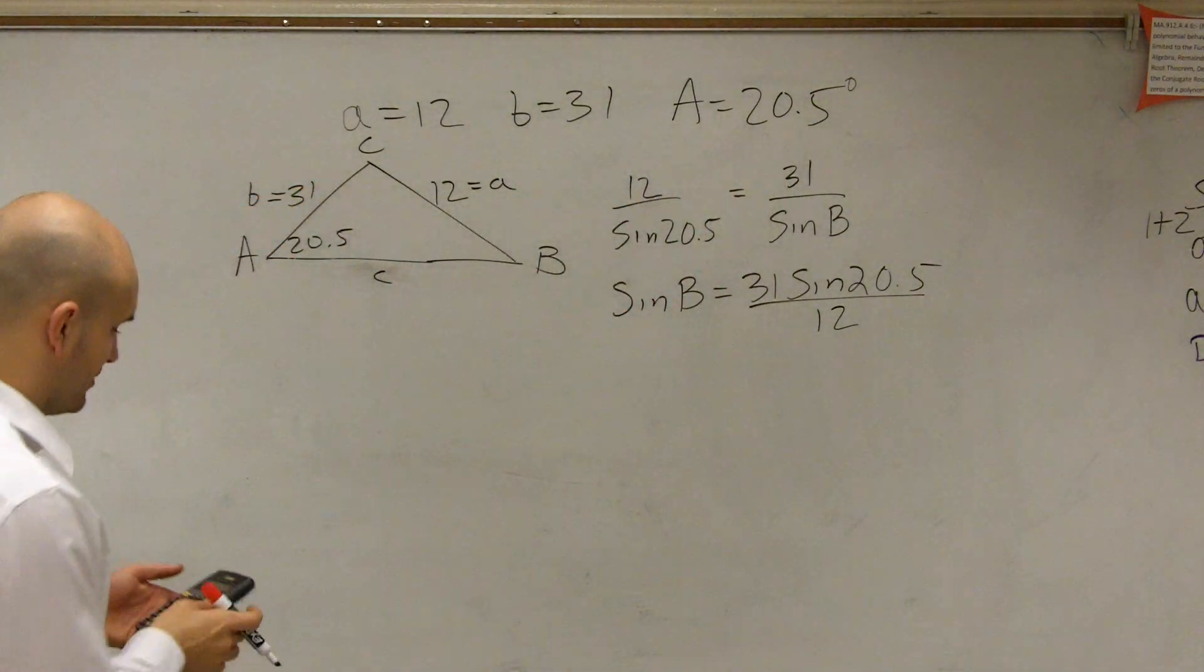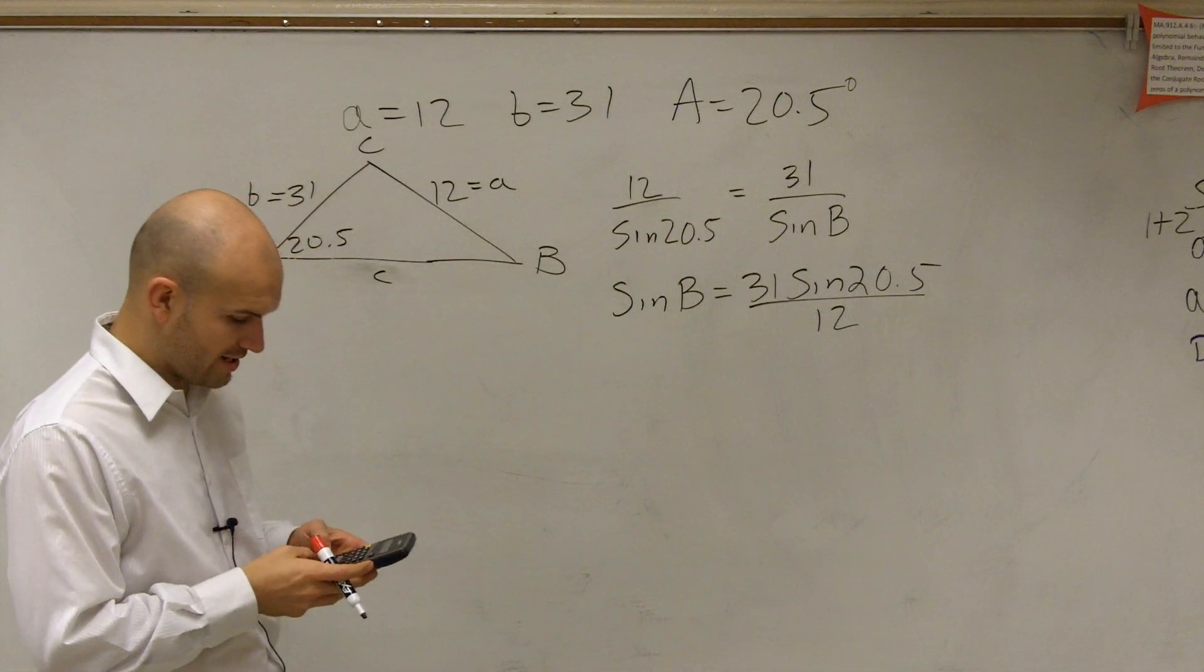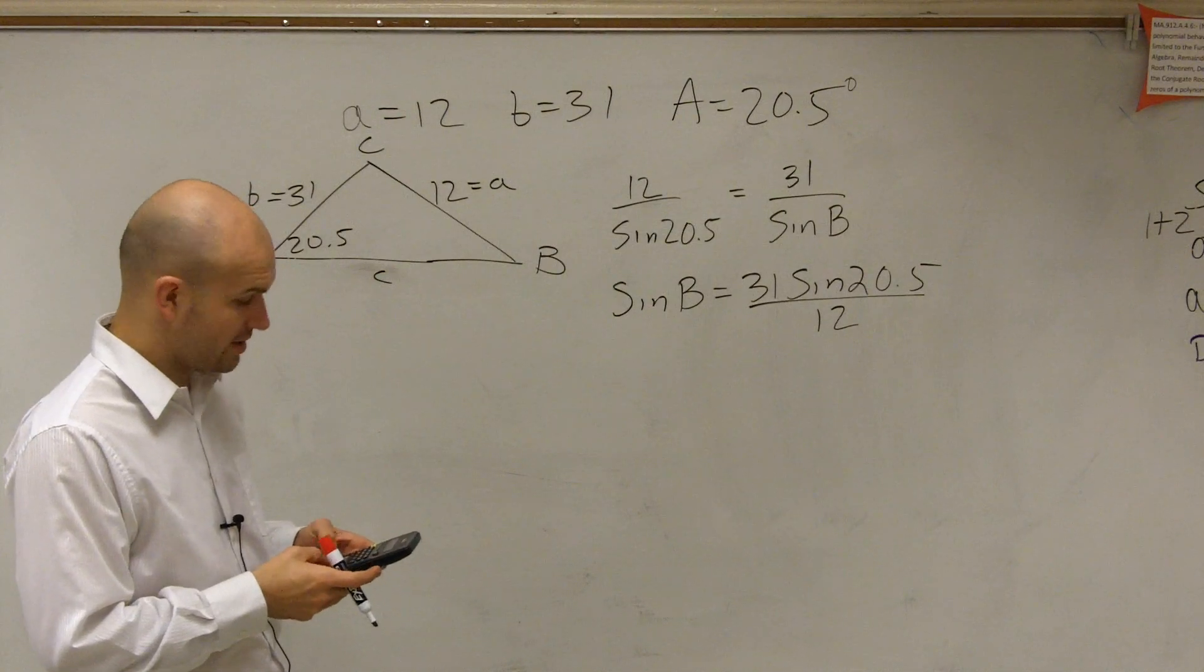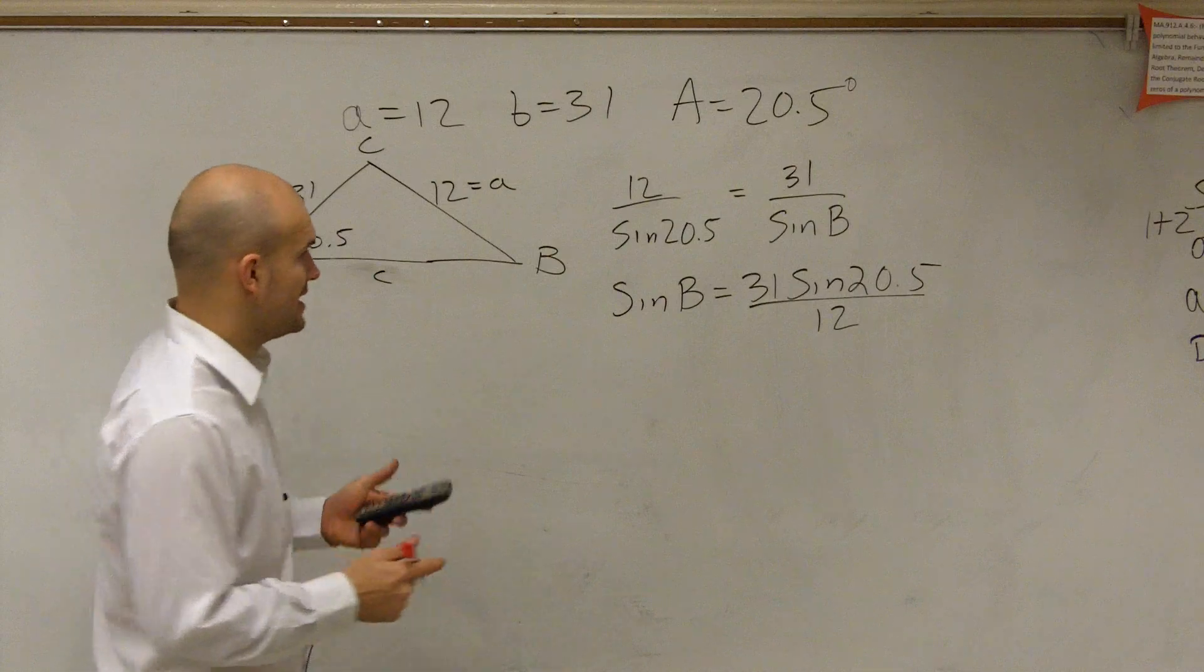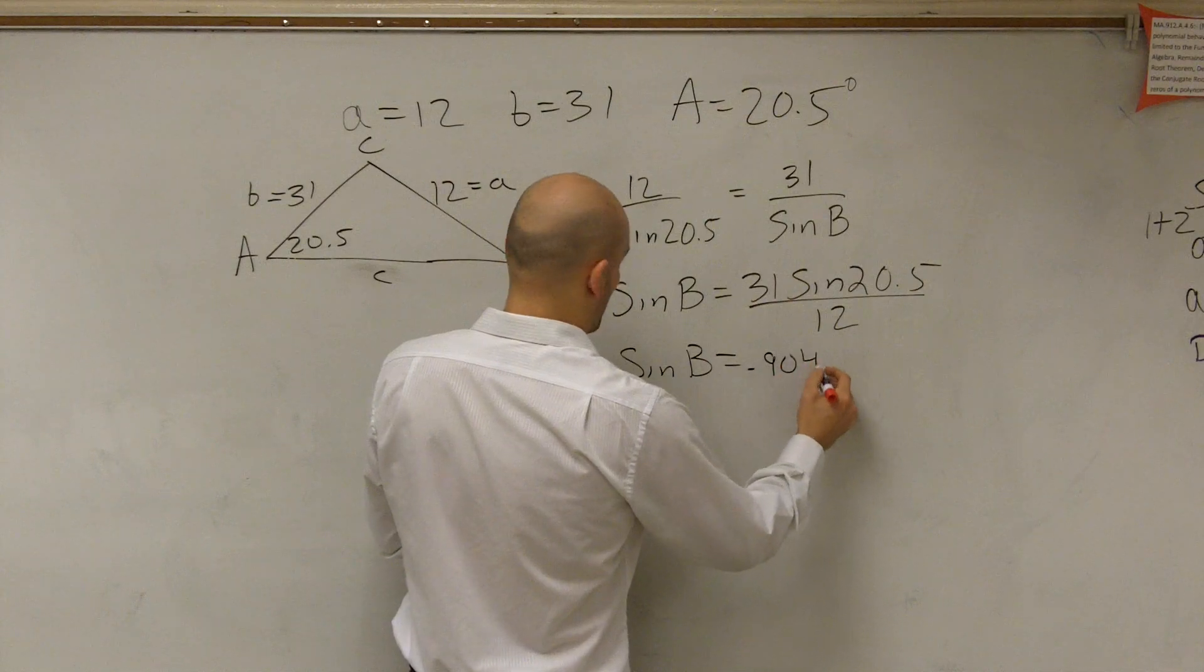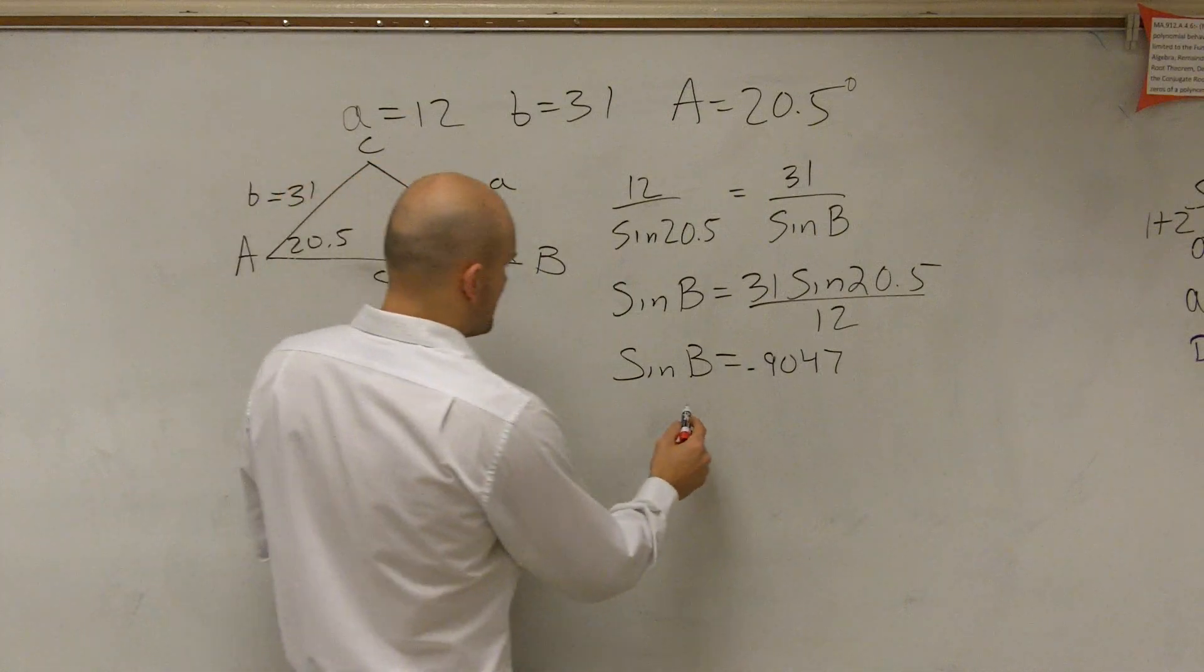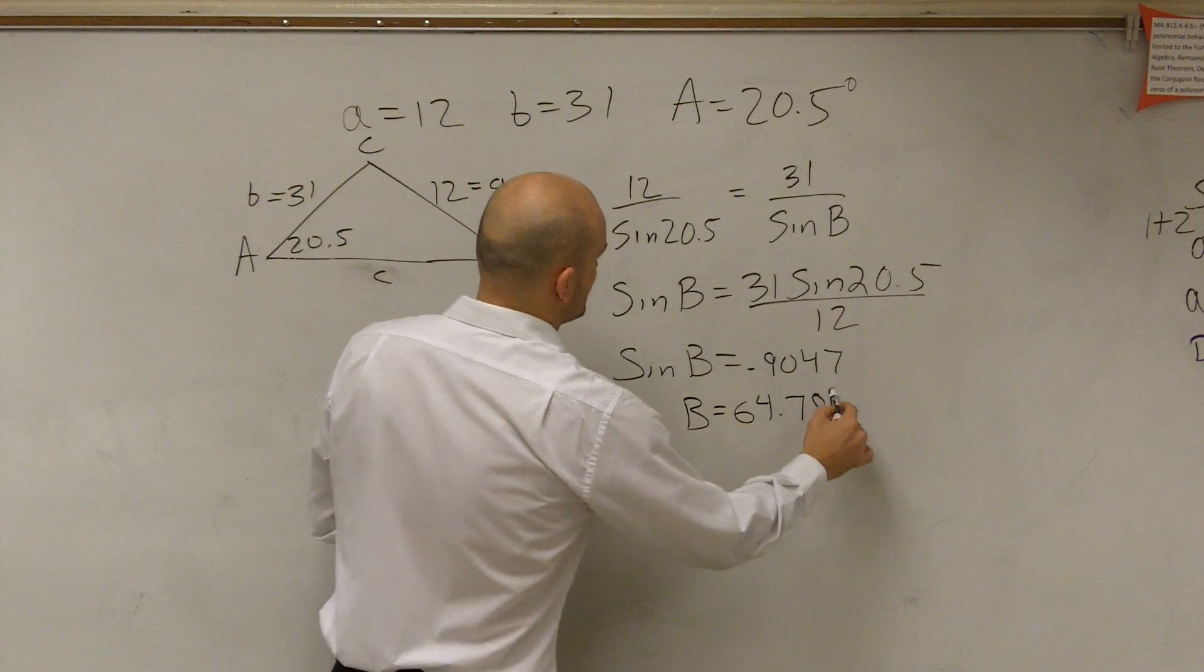The sine of B is equal to 31 times sine of 20.5 divided by 12. So let's go and plug, check all this stuff in. So you have 31 times sine of 20.5 divided by 12. And you get sine of B equals 0.9047. Take the inverse sine of that, and you get B is equal to 64.78 degrees. All right?